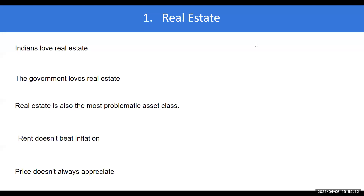The right answer is what about 48% of you chose — the primary purpose of investing in real estate is to have a home. However, 52% of you, more than half, still chose the other options. That tells you just how much scope there is to correct just one misconception.